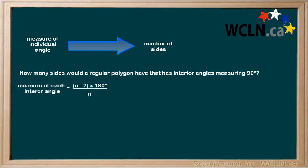Start with the formula for individual angles of a regular polygon. Now substitute 90 degrees in and solve for n.